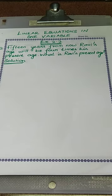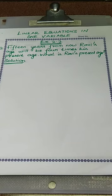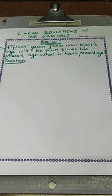Here some detail is given. We have to imagine that the given person's age be x. Next we have to frame an equation, then we have to find the unknown value. Here we are discussing about Ravi's age, so first we have to assume the present age of Ravi be x.